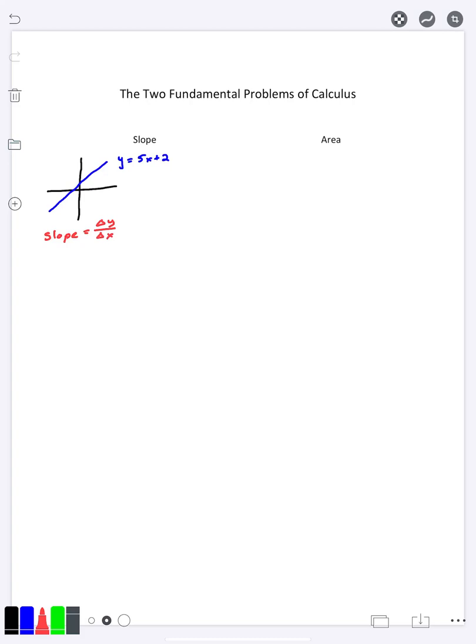Or you could write it in the y2 minus y1 over x2 minus x1 notation. Since it's a line, you might have learned in algebra class that that number in front of the x, the coefficient, that's going to be your slope. So in this case here my slope would be 5.